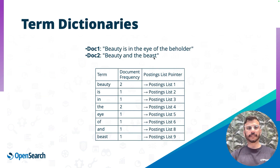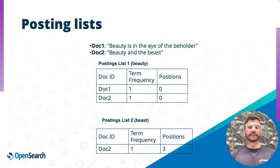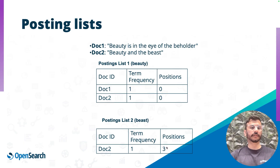To explain with some examples using the same two sample documents: we have the unique terms list, and then the document frequency — 'beauty' appears in both documents so the document frequency is two; 'beast' appears in only one document so the document frequency is one. Then we have the posting list, which tells us everything about where and how these terms appear in the document. For example, 'beauty' appears in document one, one time at position zero. It also appears in document two, one time at the same position. The term 'beast' only appears in the second document, one time, but at the third index position. This is important because we want to run phrase queries, exact match searches, and proximity searches.